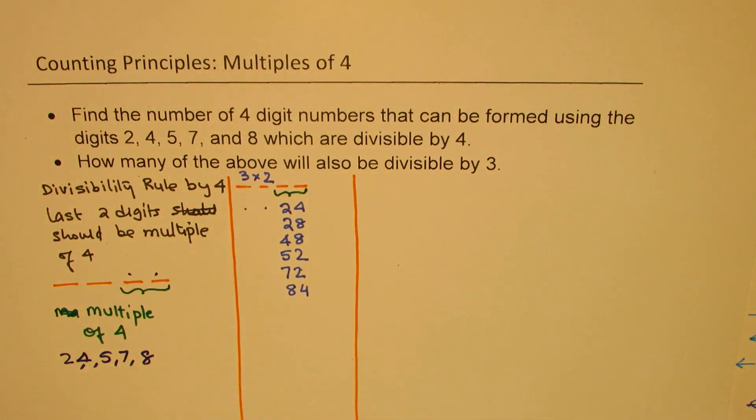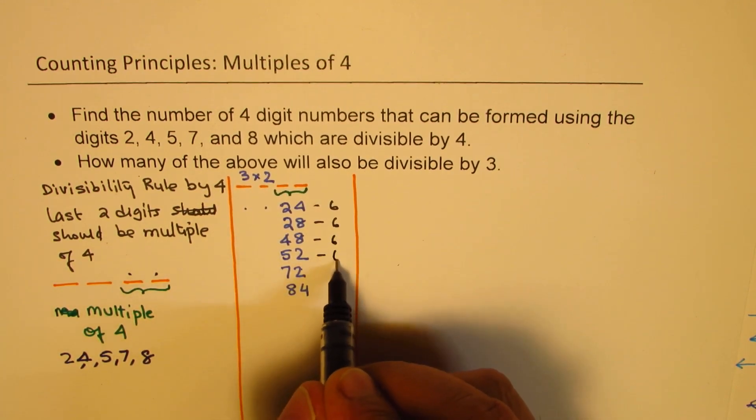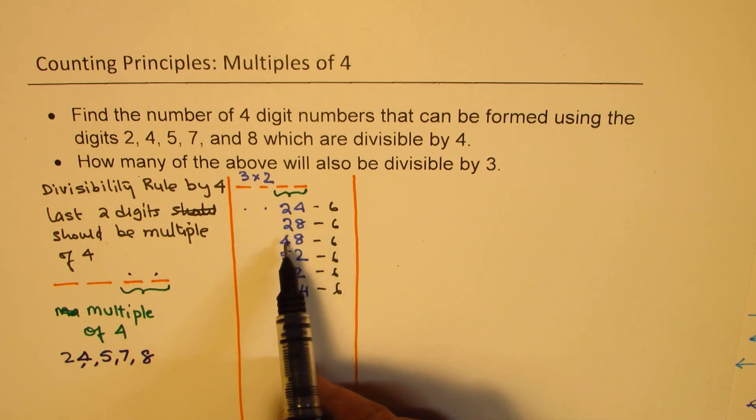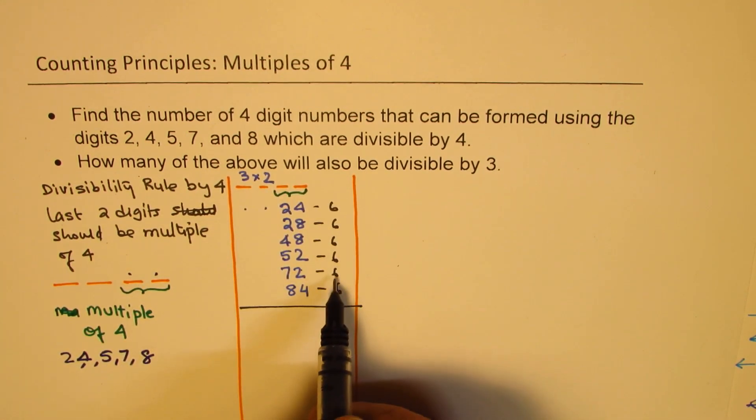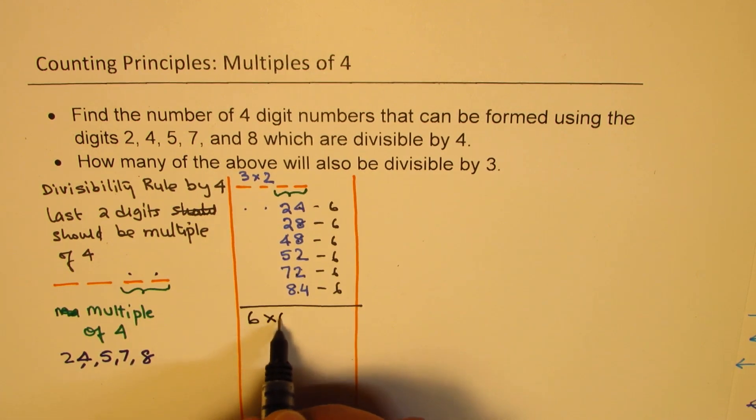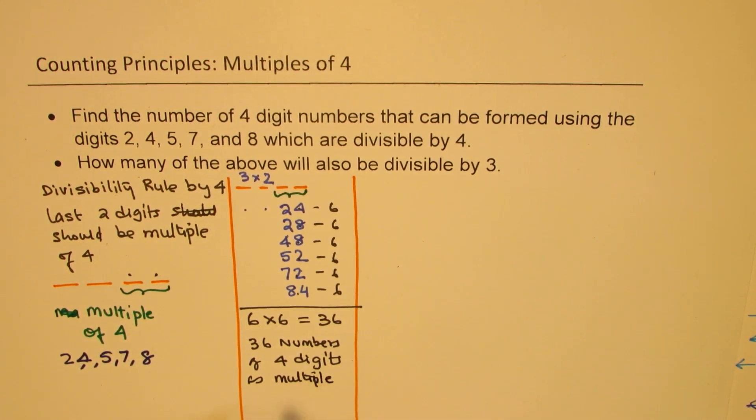So with that in mind, we can actually write down the solution for part A. And that is, for each, we get 6 combinations. So there are 6 numbers for each, ending with 24, 28, and so on, which are multiples of 4 and are 4-digit numbers. So the answer here is 6 times 6, which is 36. So we have 36 numbers of 4 digits as multiple of 4. That is how we are going to solve this part.